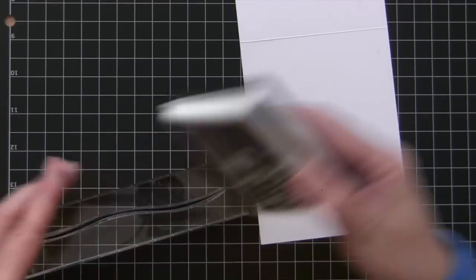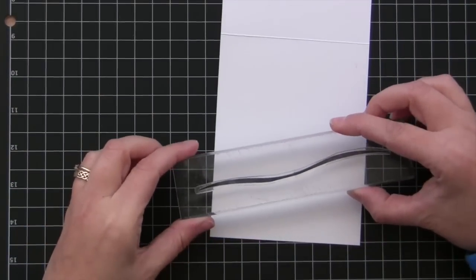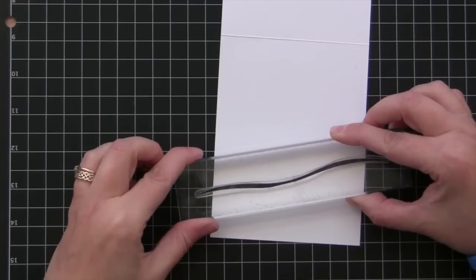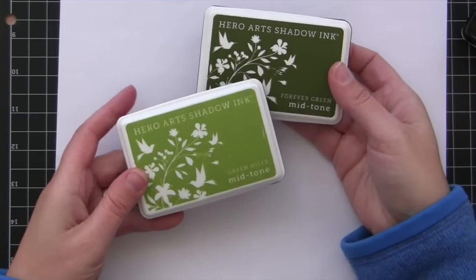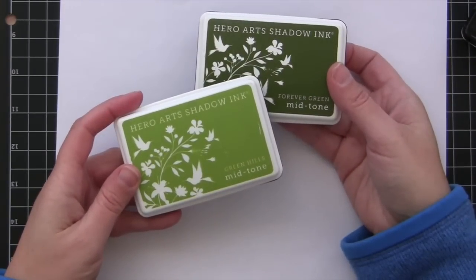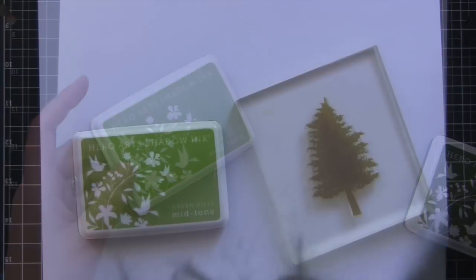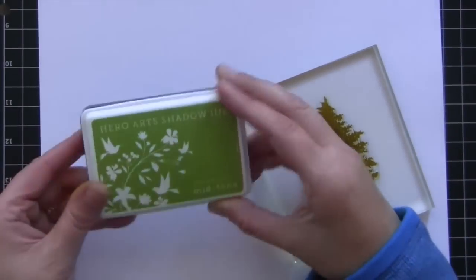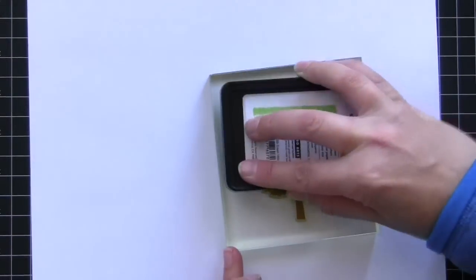Next I wanted to talk a little bit about these Hero Arts shadow midtone inks. These are great if you have a solid stamp like this tree, and I wanted to share a trick for inking it up.